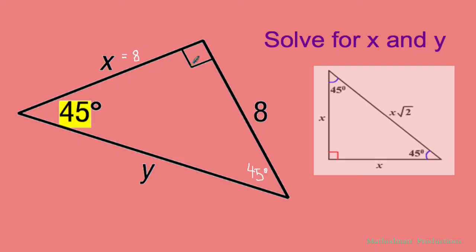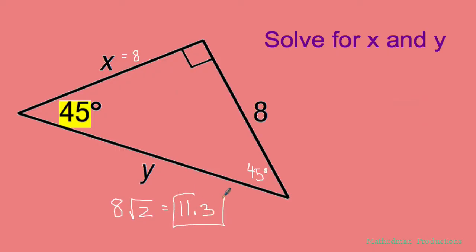The one across the 90 degree angle is going to be whatever this leg is, 8 times the square root of 2. 8 times the square root of 2 is about 11.3. So my answer for Y is 11.3 or 8√2, and X is 8.